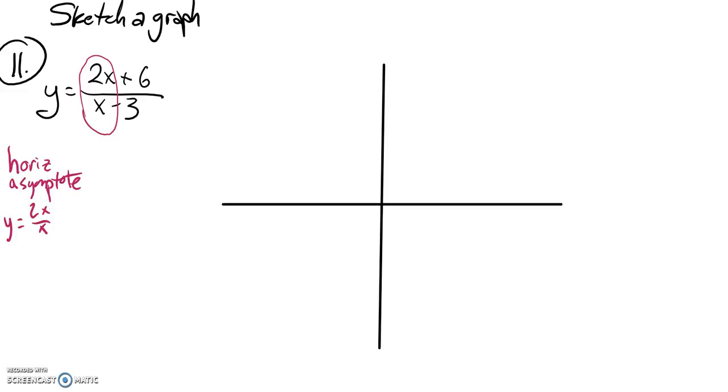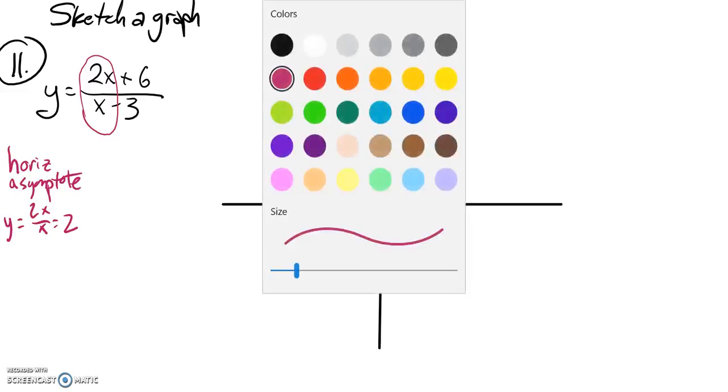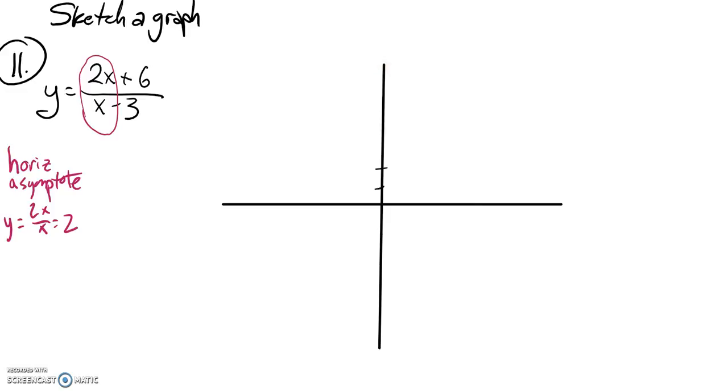Notice that 2x over x just settles down to 2. So that tells me I have a horizontal asymptote at 2. Let me put some tick marks on here. So right here at 2, I have a horizontal asymptote, y equals 2.